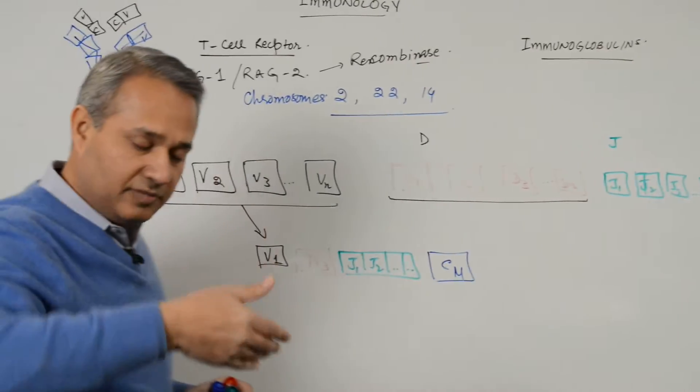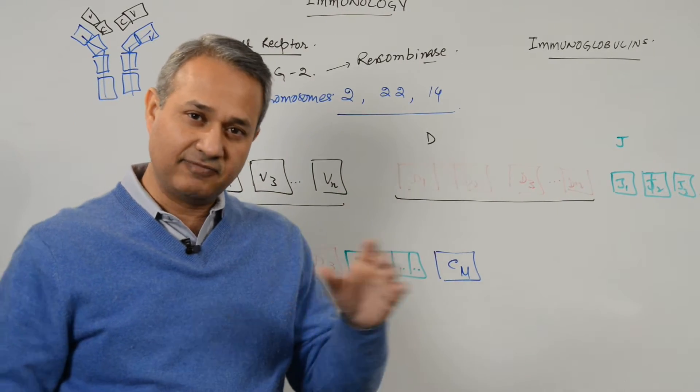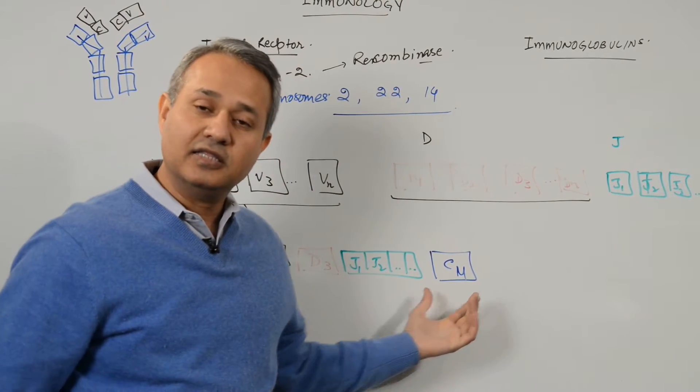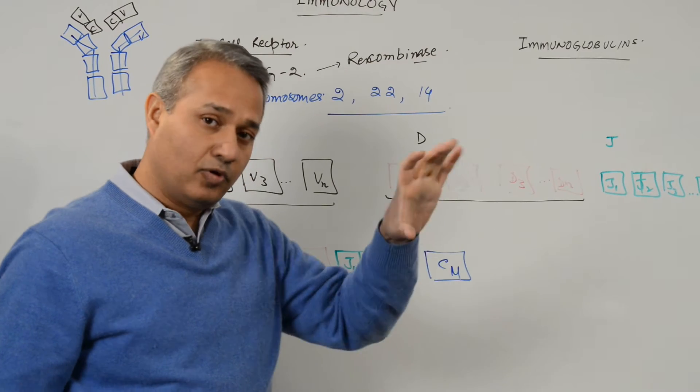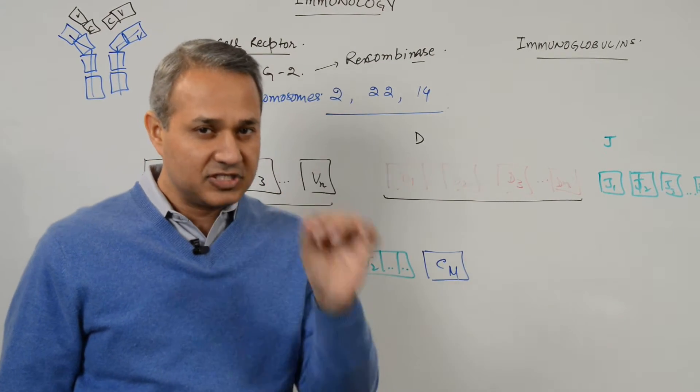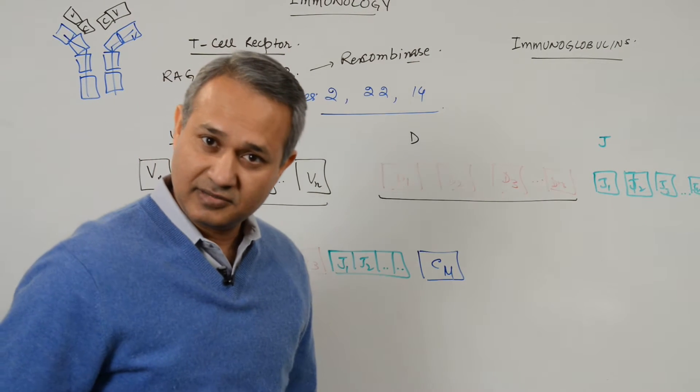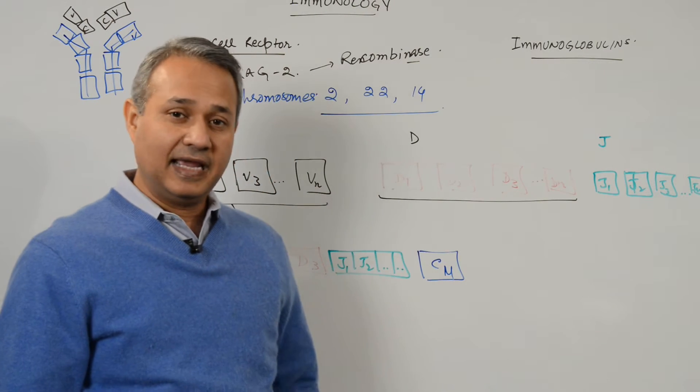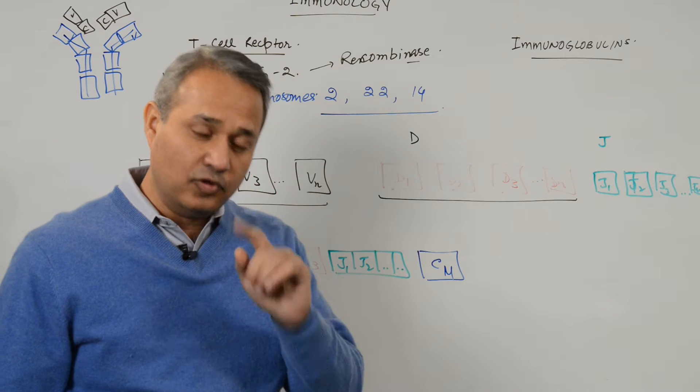Although when we do the immunoglobulin you will see that the very first time when the constant regions are picked up, there are mu and delta both picked up together. That is why the very first time a B cell encounters an infection, an antigen, it actually makes M and D both.